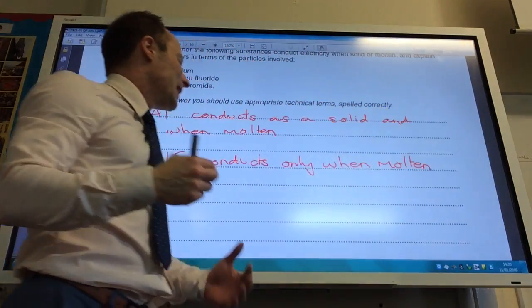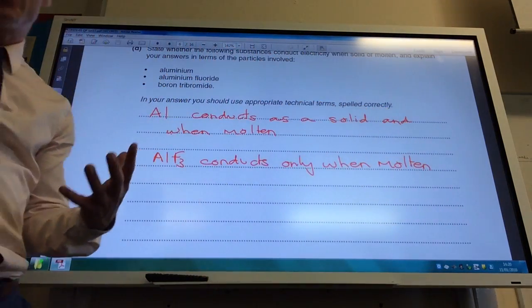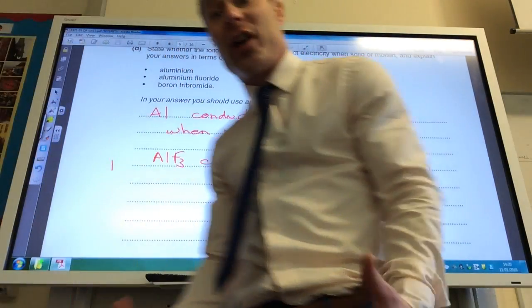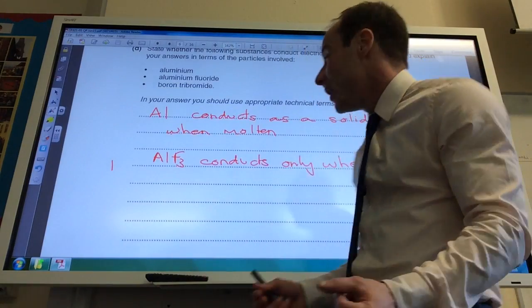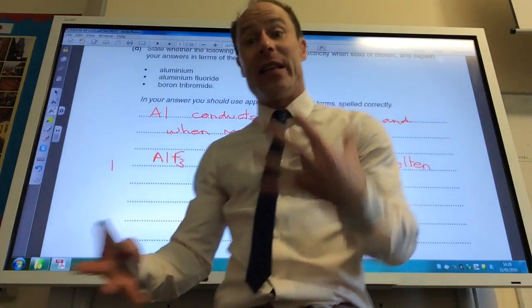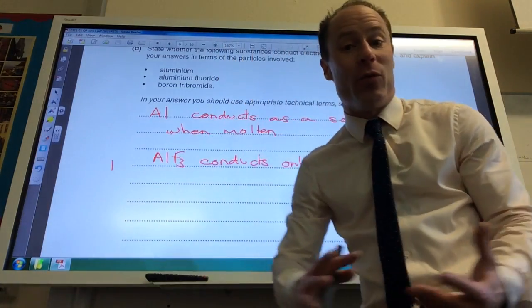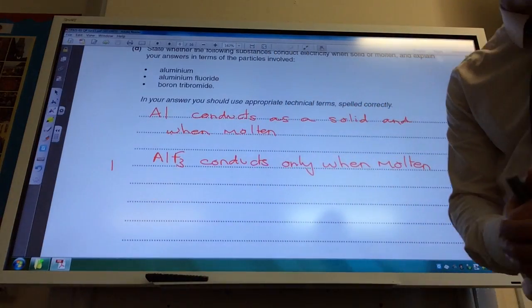Why is that? Well as a solid, the ions are in fixed positions in the giant ionic lattice, they can't move. But when it's molten, the ions can move and therefore can conduct an electric current.